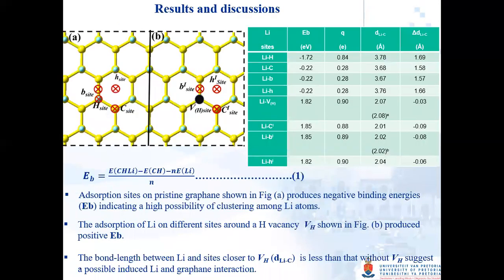Moving on to our results and discussion, Fig-A shows the different adsorption sites on pristine graphane, and Fig-B shows the different adsorption sites around a hydrogen vacancy. Equation one was used to calculate the binding energies of all the configurations. Adsorption sites on pristine graphane produce negative binding energies, indicating a high possibility of clustering among lithium atoms. The adsorption of lithium on different sites around a hydrogen vacancy shown in Fig-B produces positive binding energies as shown in this table. The bond length between lithium and sites closer to the hydrogen vacancy are less than that without a hydrogen vacancy, which suggests a possible induced lithium-graphane interaction.